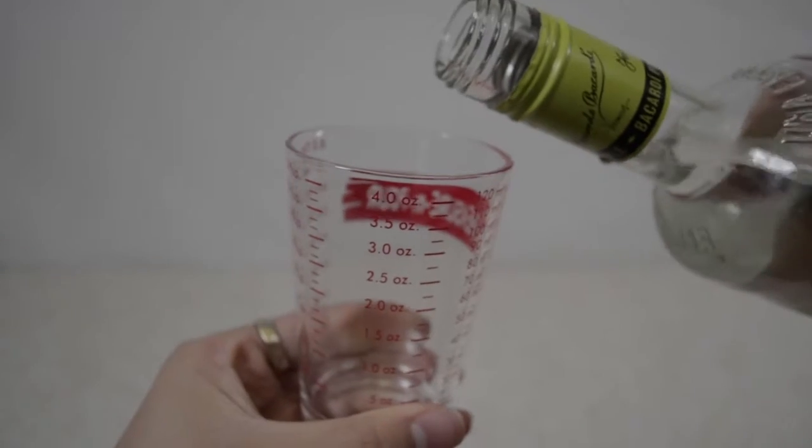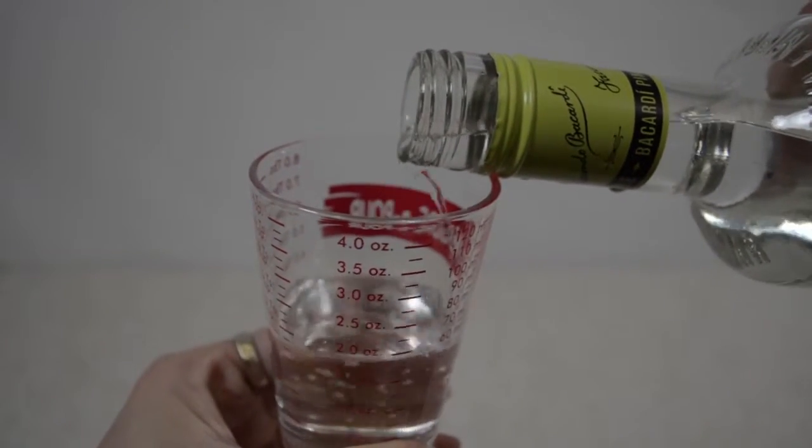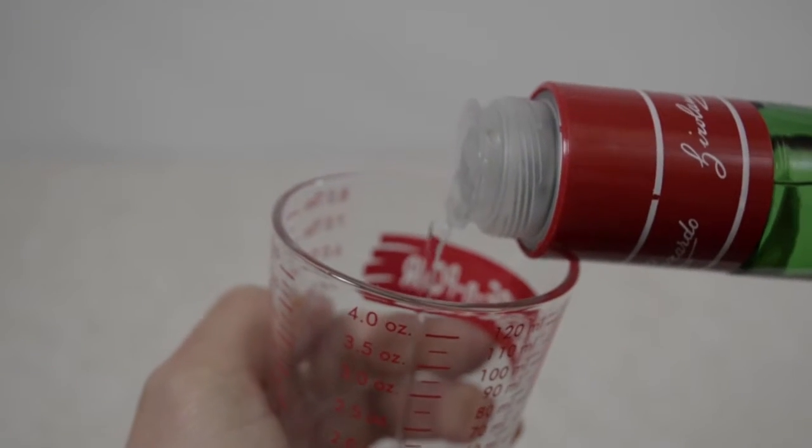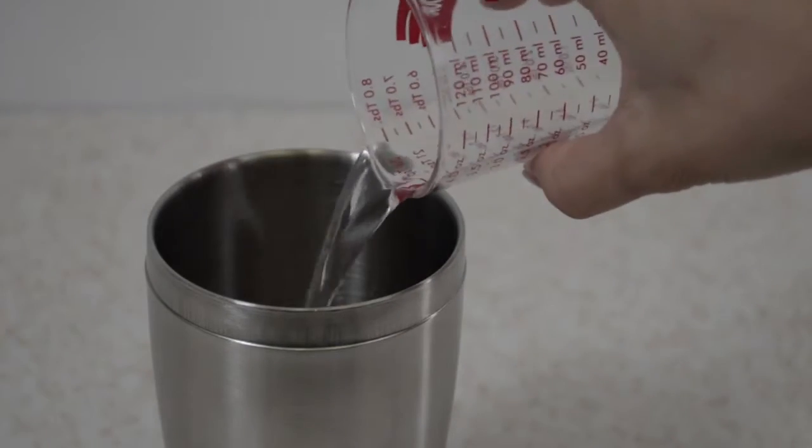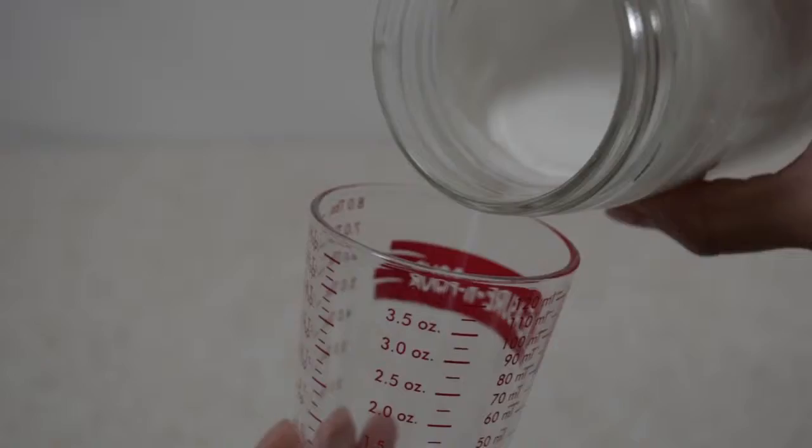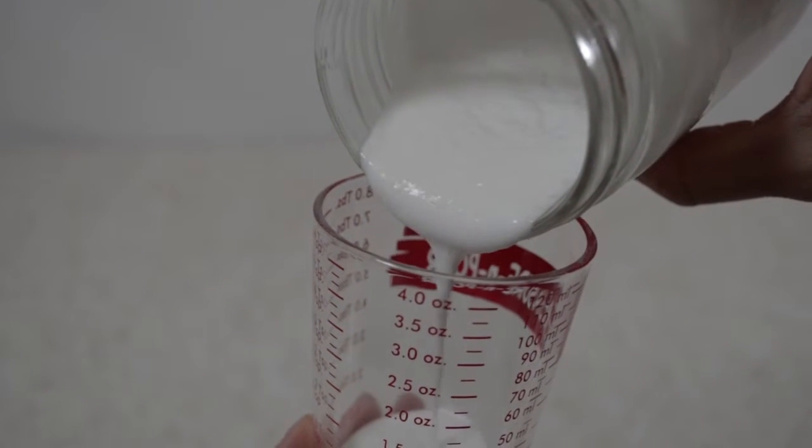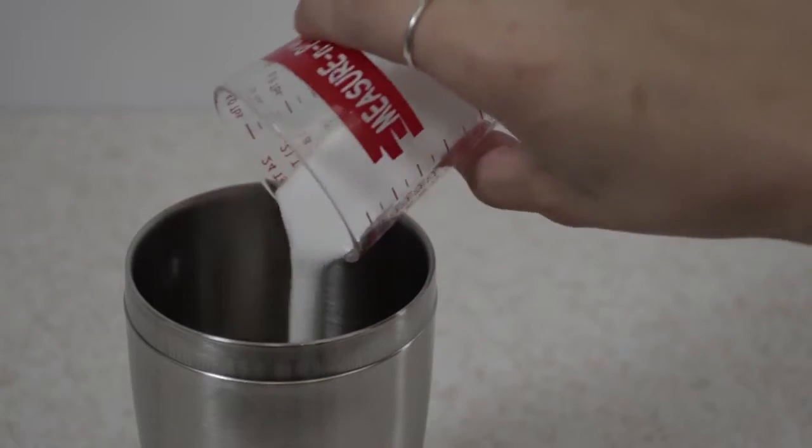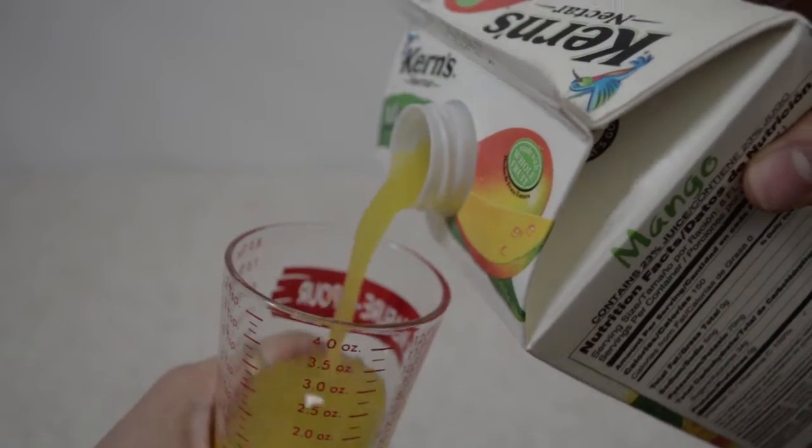Measure out 2 1/2 oz of pineapple rum, 1/2 oz of maraschino liqueur, 1/2 oz of coconut milk, and 2 oz of mango juice.